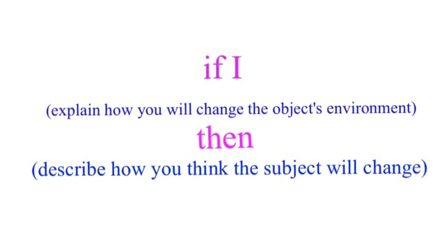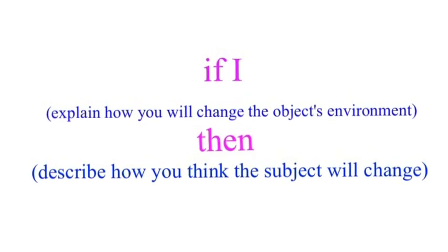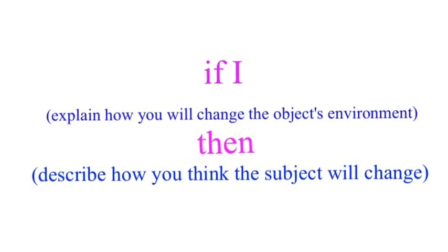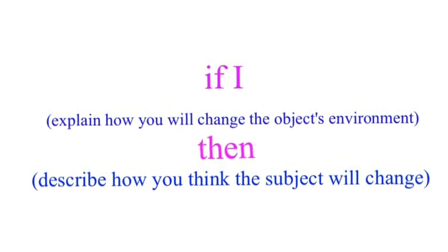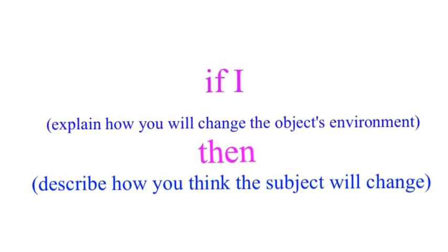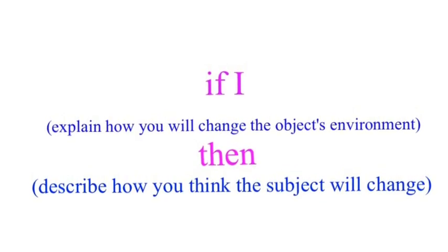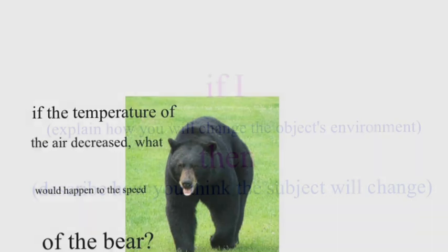So I think the bear might speed up when it's cooler. So, if I decrease the temperature of the air in the forest, then the velocity of the bear will increase. See how I fit that into this formula for making a hypothesis?